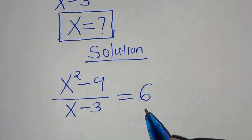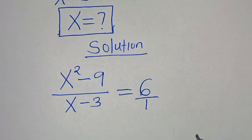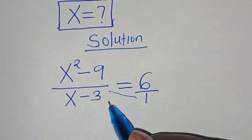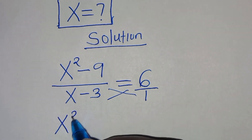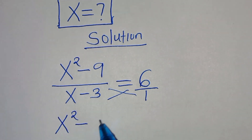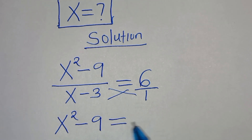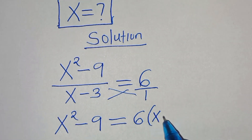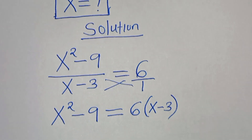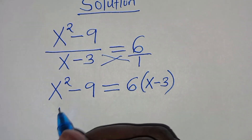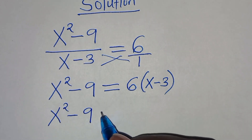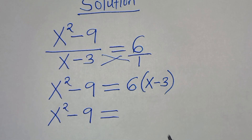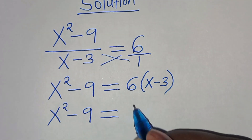Now 6 is our number, so this is over 1. The first step is to cross multiply, so that we have x squared minus 9 equal to 6 multiplying by x minus 3. So we have x squared minus 9 equal to 6 times x minus 3.